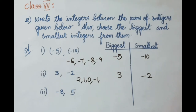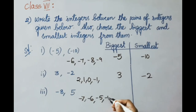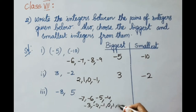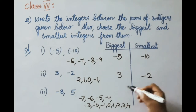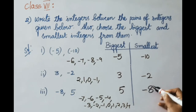See the next pair: minus 8 and 5. We must write the integers between them: minus 7, minus 6, minus 5, minus 4, minus 3, minus 2, minus 1, 0, 1, 2, 3, 4. These are the integers present between minus 8 and 5. Here, 5 is the biggest integer and minus 8 is the smallest integer.